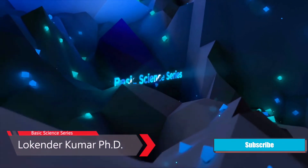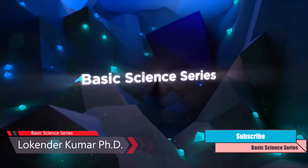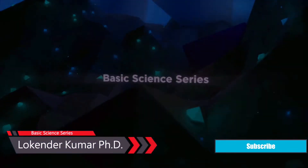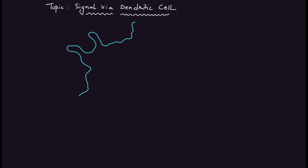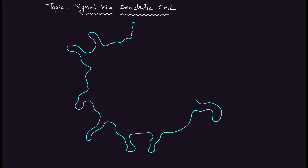Today our topic of discussion is cell signaling via dendritic cells. We're going to discuss how different types of pathogenic molecules activate the dendritic cell. I'll first design a dendritic cell outline and use it to explain how dendritic cell signaling works.